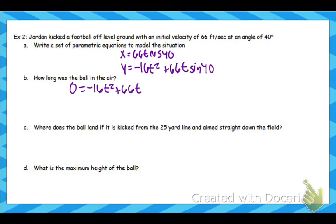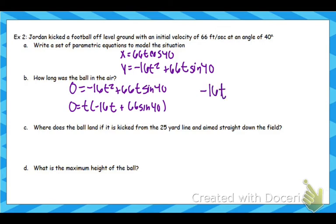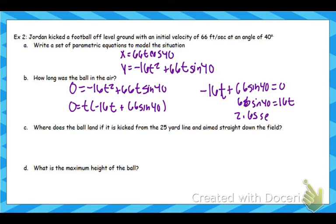Both of these have a t, so we can factor t out. Then set each factor equal to 0. t equals 0 — that's the start. So I would do negative 16t plus 66 sine 40 equals 0. That means 66 sine 40 is going to equal 16t. So then I would divide by 16. So 66 sine 40 divided by 16 is going to give me a time of 2.65 seconds. So algebraically, that's how we can find this point.